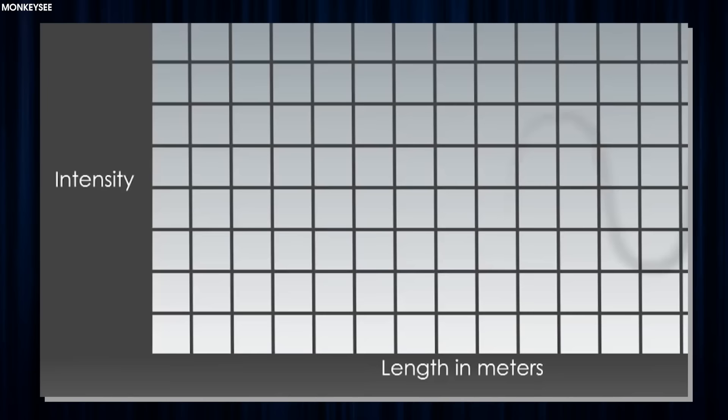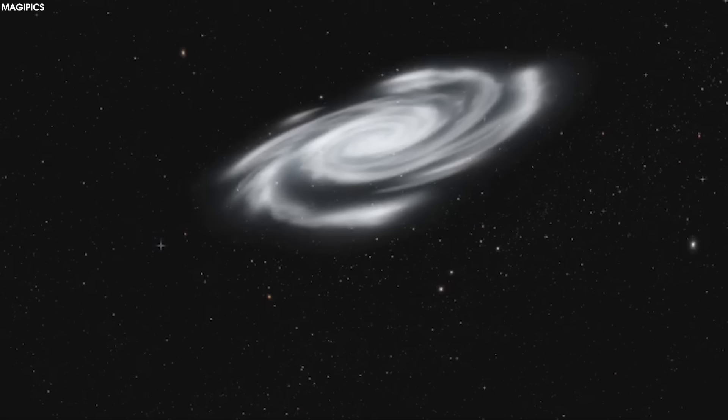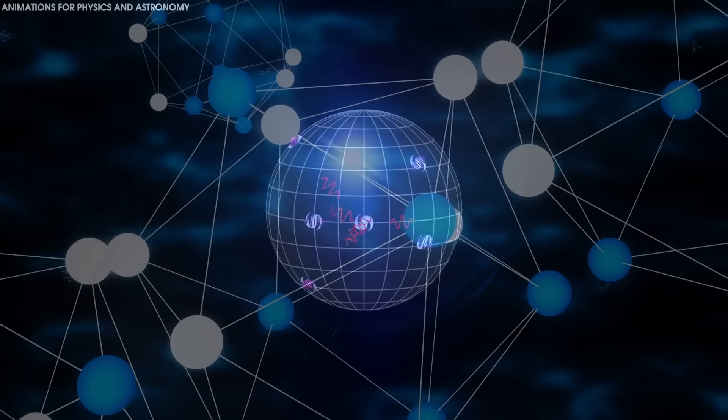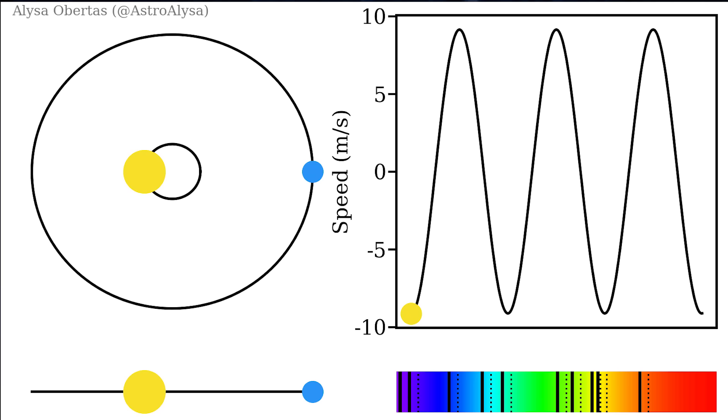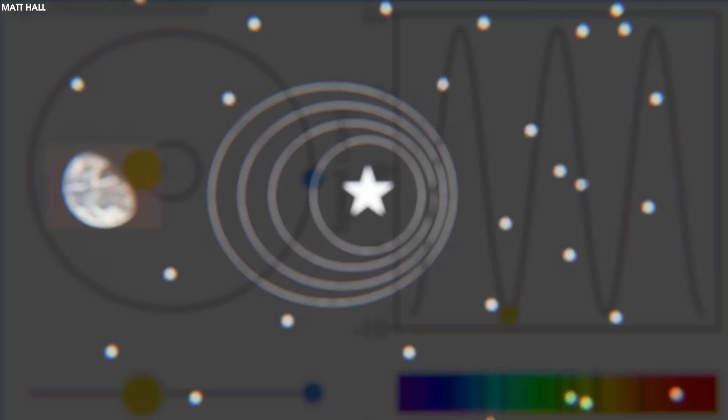By breaking up the light from these objects into their various wavelengths, Slipher noted that many of them had the same spectral lines we were familiar with from the known elements, but were systematically shifted, like something had stretched them to longer wavelengths. One possible explanation at the time was that of a Doppler shift, as though these objects were moving away from us.